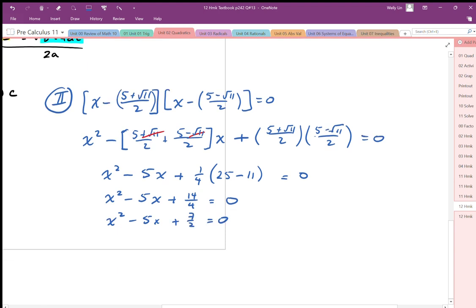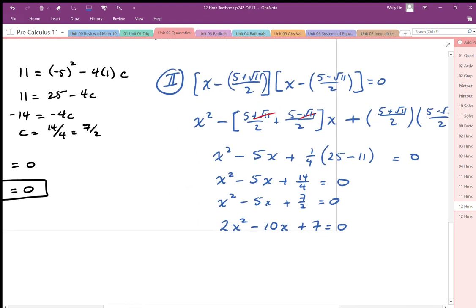And then we're just going to multiply both sides of that equation to get rid of that divide by 2. So 2x squared minus 10x plus 7 equals 0. And that's our quadratic equation. That's the same as I got over here.